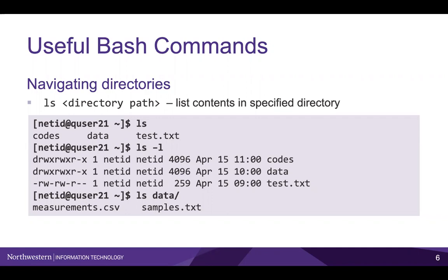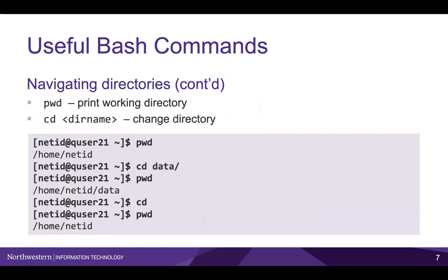I will talk more in depth about what the string of characters means in the last part of this video. pwd, which stands for print working directory, will return the path of your current working directory. In the first example on the slide, our current working directory is /home/netID. cd stands for change directory. This will change your working directory to the specified one. You can see in the example that after moving into the data directory, pwd now returns our updated working directory path. cd with no argument will bring you back to your home directory.